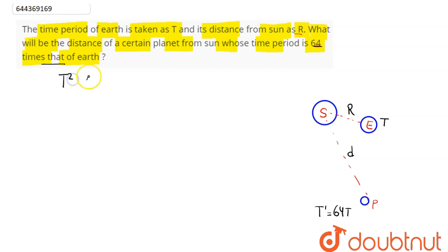As we know by Kepler's law of time period, T² is proportional to R³. Therefore we can say T₁² divided by T₂² is equal to R₁³ divided by R₂³.